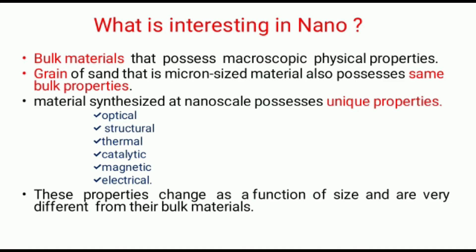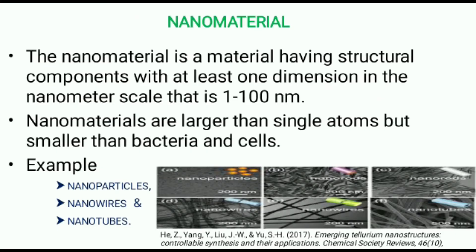What is interesting about nano is that bulk materials possess microscopic physical properties. Grains of sand, which are micron-size materials, also possess the same properties as bulk material. However, materials synthesized at the nanoscale possess unique properties. Strange things happen to materials — optical, structural, thermal, catalytic, magnetic, and electrical properties change as a function of size and are very different from their bulk counterparts.